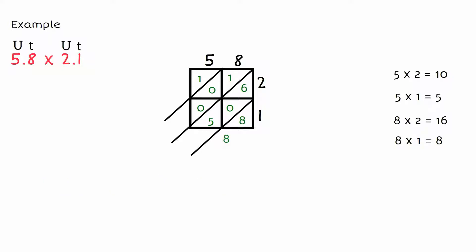We have 8 on the first diagonal. 5 add 6 is 11, so we write down 1, carry 1. So 1 add 1 is 2, and on the last diagonal we have 1. Total: 1218.